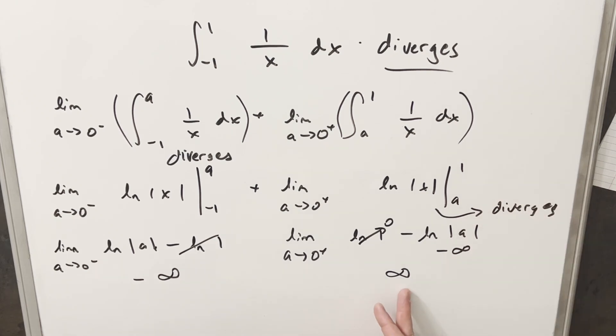And before I finish up, one thing you may notice here, we actually have infinity minus infinity. Now you may want to put a 0 on this, but this is actually an indeterminate form. So we can't say this is 0. We just don't know what this is. We just know that our integral diverges.